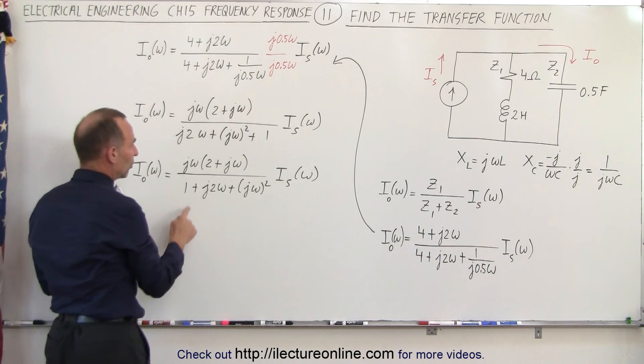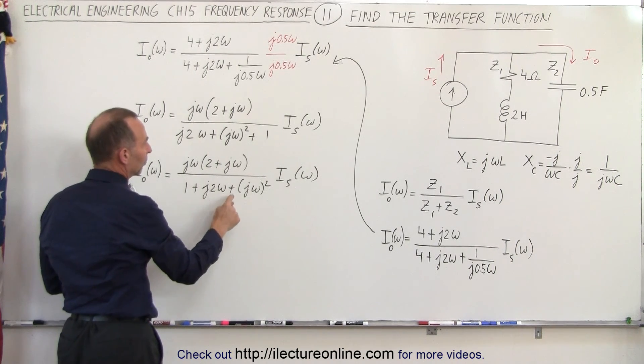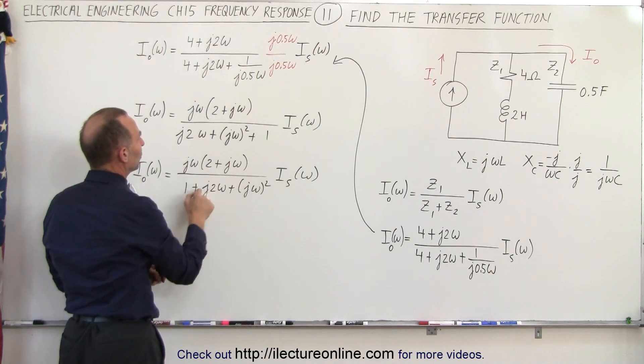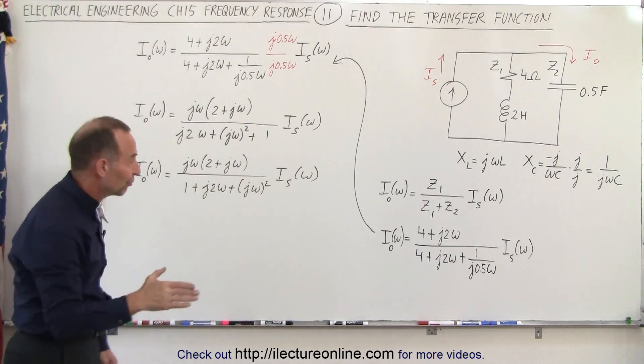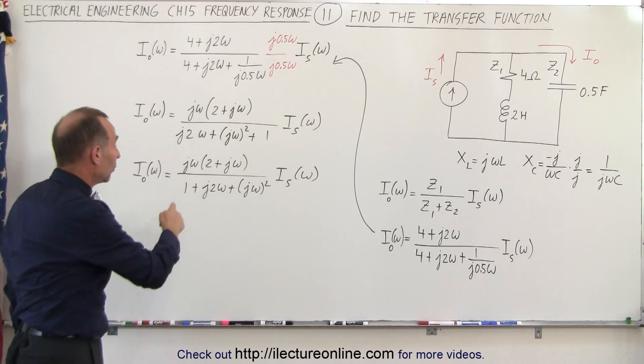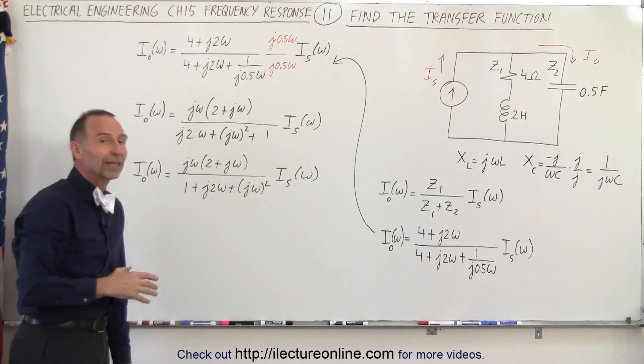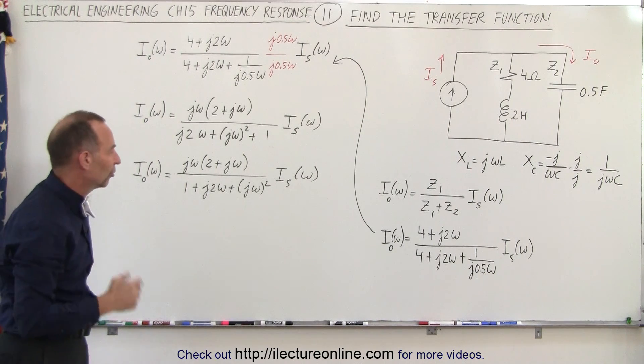Then if we rearrange the order we get 1 plus J2 omega plus J omega squared in the denominator. In the numerator we get J omega times 2 plus J omega. Now if you watched a few of the previous videos, you then realize that this is the transfer function we've been using to try and find the poles and the zeros.